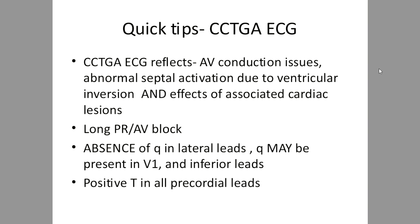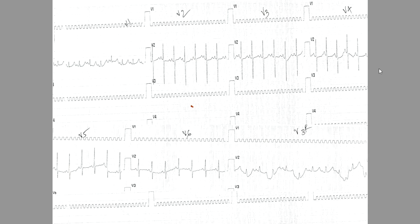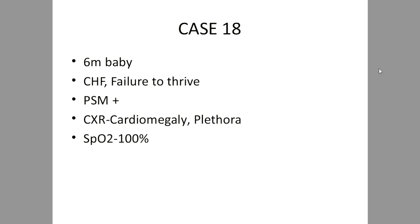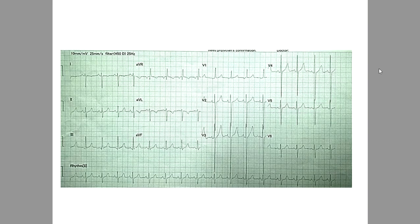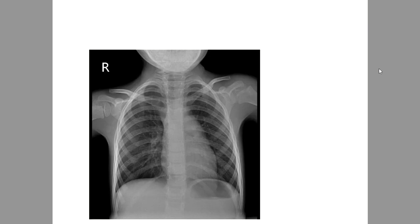ECG in corrected TGA reflects: AV conduction issues, abnormal septal activation due to ventricular inversion, and associated cardiac lesions. There is no single typical ECG, but key clues are deep Q-waves in lead III and lack of septal Q-waves in V6. Corrected TGA has a predilection for first-degree or more advanced AV block — 1-2% per year during follow-up. Another subtle clue: positive T-waves in all precordial leads (V1 to V6) due to side-by-side alignment of ventricles — important especially when no coexisting heart disease is present.